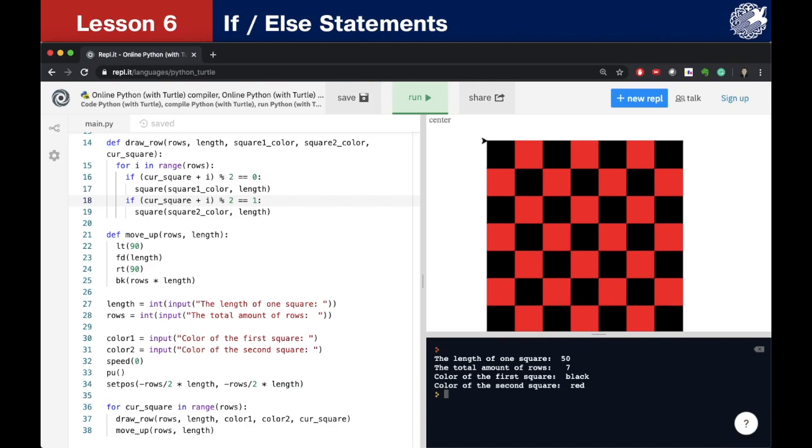But what if we want to draw chessboard with 5 rows and 7 columns or 6 rows and 4 columns? Try to solve this problem on your own. We will solve it together in the next lesson.